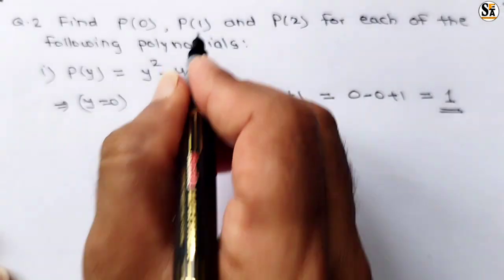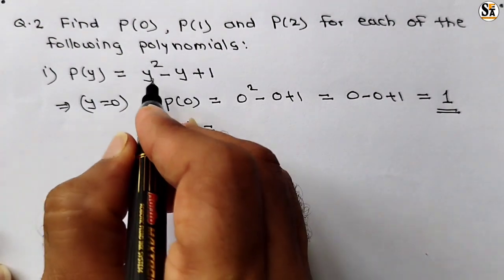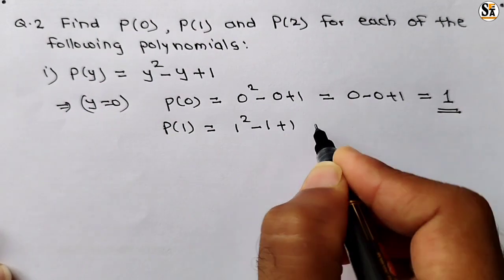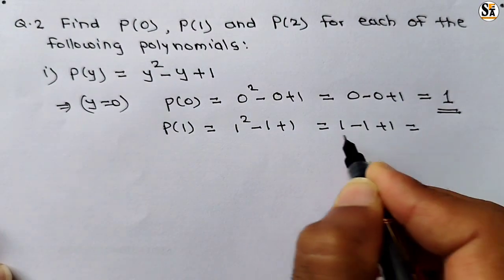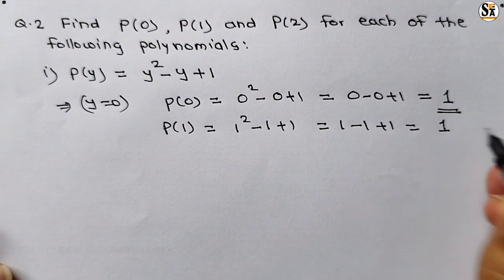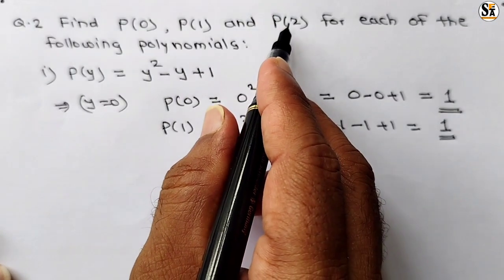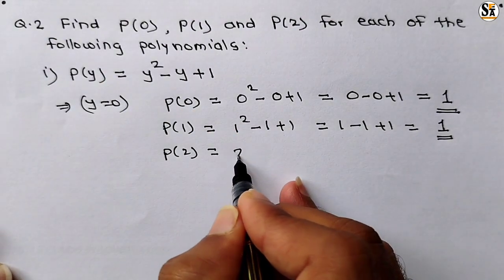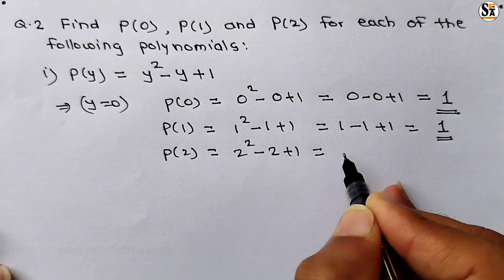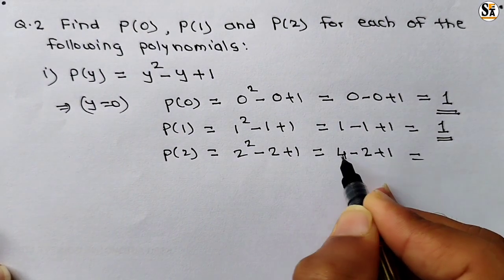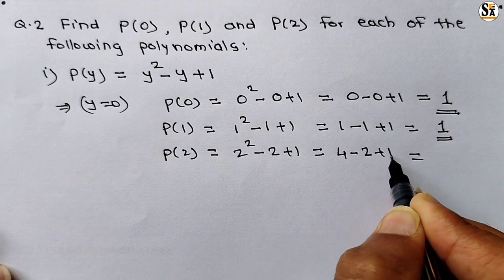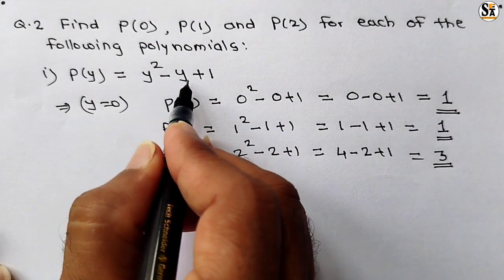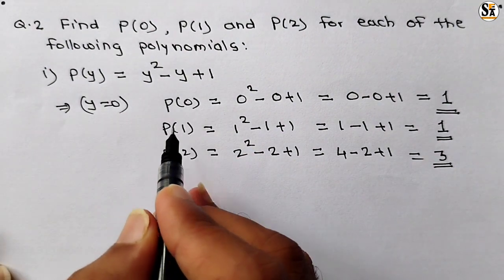In the second case, p(1) means put value of y as 1 in y² minus y plus 1. So 1² minus 1 plus 1 equals 1 minus 1 plus 1. The 1 and −1 cancel, so the answer is 1. In the third case, put y equal to 2: p(2) equals 2² minus 2 plus 1, that is 4 minus 2 plus 1 equals 2 plus 1 equals 3. So the three answers for y² minus y plus 1 when y equals 0, 1, and 2 are 1, 1, and 3.